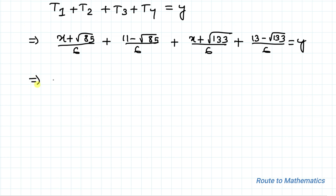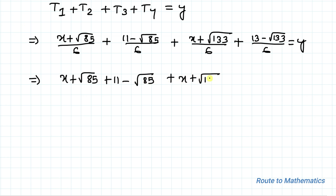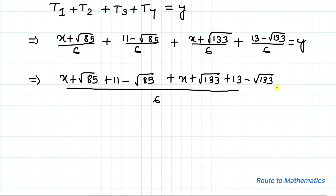Substituting all simplified values, we have t1 + t2 + t3 + t4 = (x + √85 + 11 − √85 + x + √133 + 13 − √133) / 6 = y. Here, the +√85 and −√85 cancel out, and similarly the +√133 and −√133 cancel out.